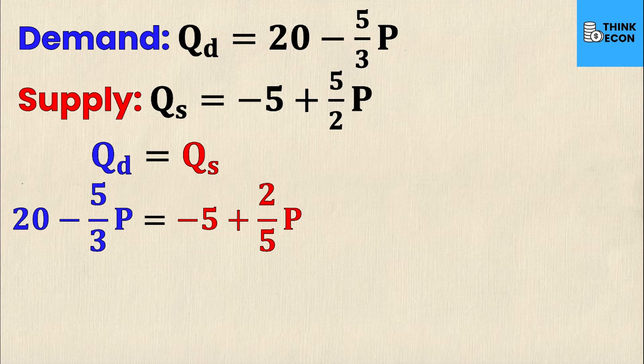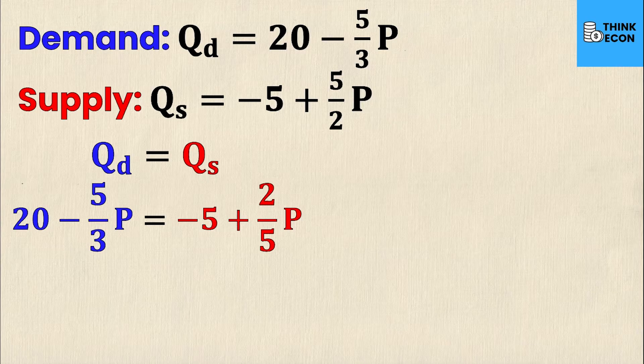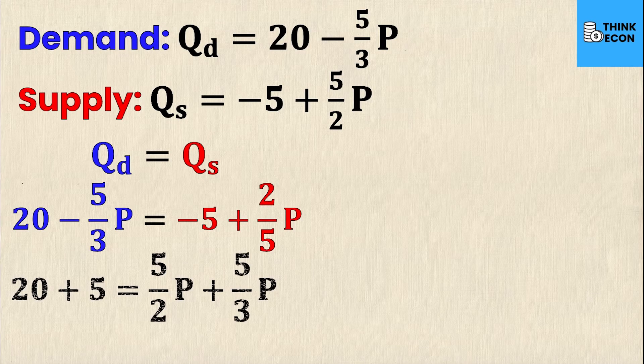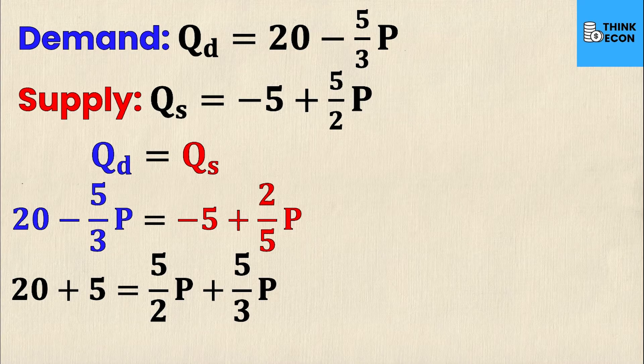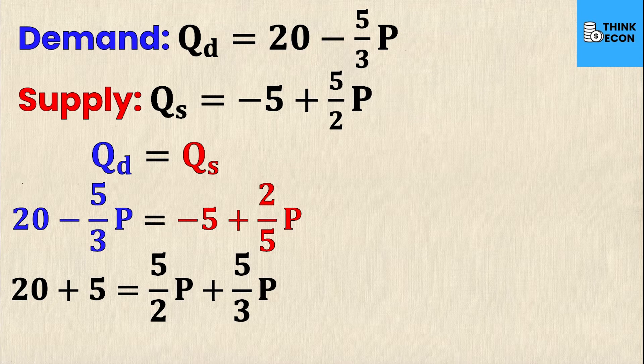I went from having two different equations, one for quantity demanded and one for quantity supplied, to having just one equation with one unknown. This is going to enable me to solve for the equilibrium price, which is P. I'm going to rearrange this equation to have all of the P's on one side and all of the constants on the other. I move the negative 5 from the right side to the left and it becomes positive 5. Then to collect like terms, I move the negative 5 over 3P to the right side, and it switches signs to positive 5 over 3P.